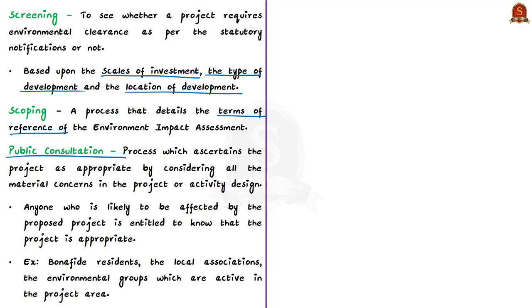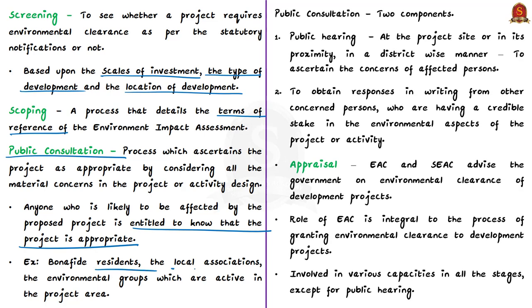The third stage, public consultation, is the process which ascertains the project by considering all material concerns in the project or activity design, and settles the concerns of local affected persons and others with a credible stake in the environmental impact. Anyone likely to be affected by the proposed project is entitled to know that the project is appropriate. Affected persons may include bona fide residents, local associations, environmental groups active in the project area, and persons located at the project site or sites of displacement. Public consultation has two components: public hearing at the project site or its proximity in a district-wise manner, and obtaining responses in writing from other concerned persons.